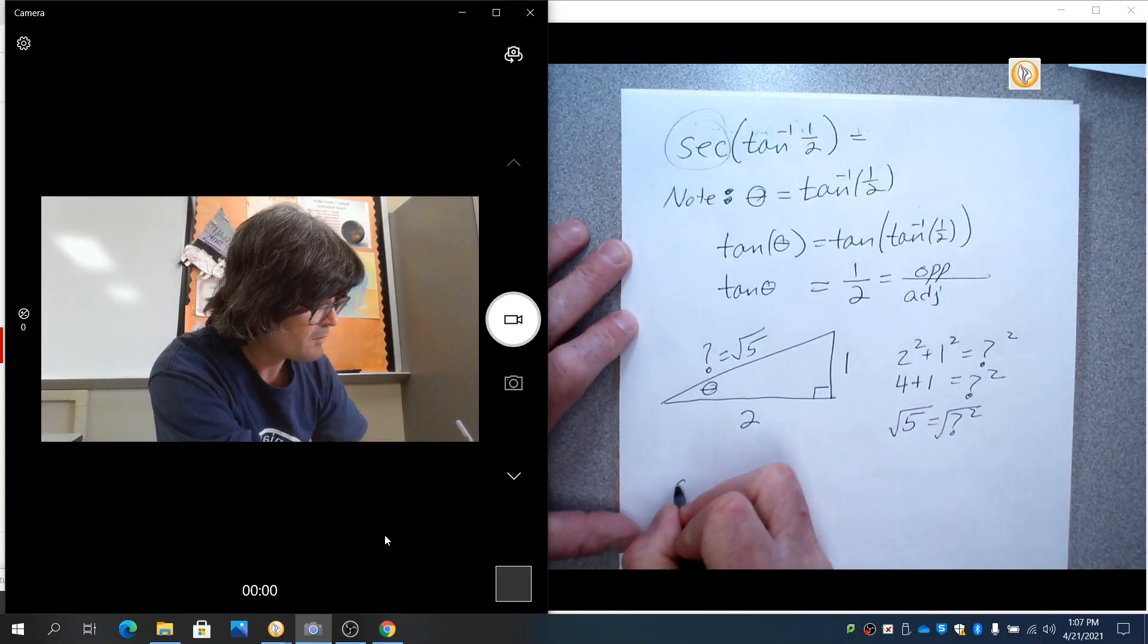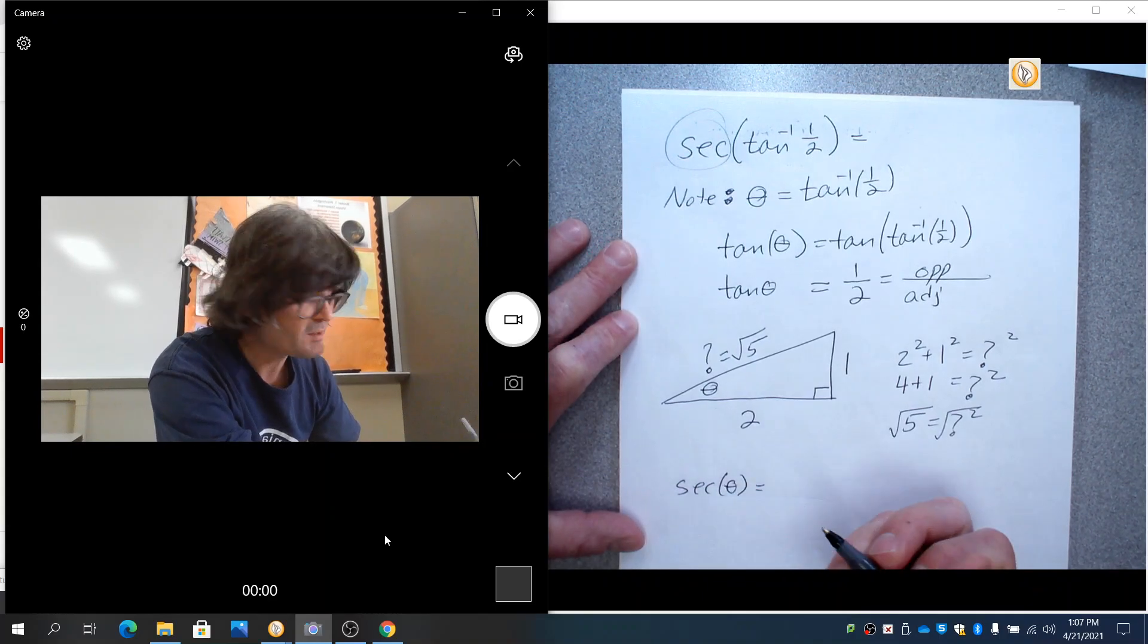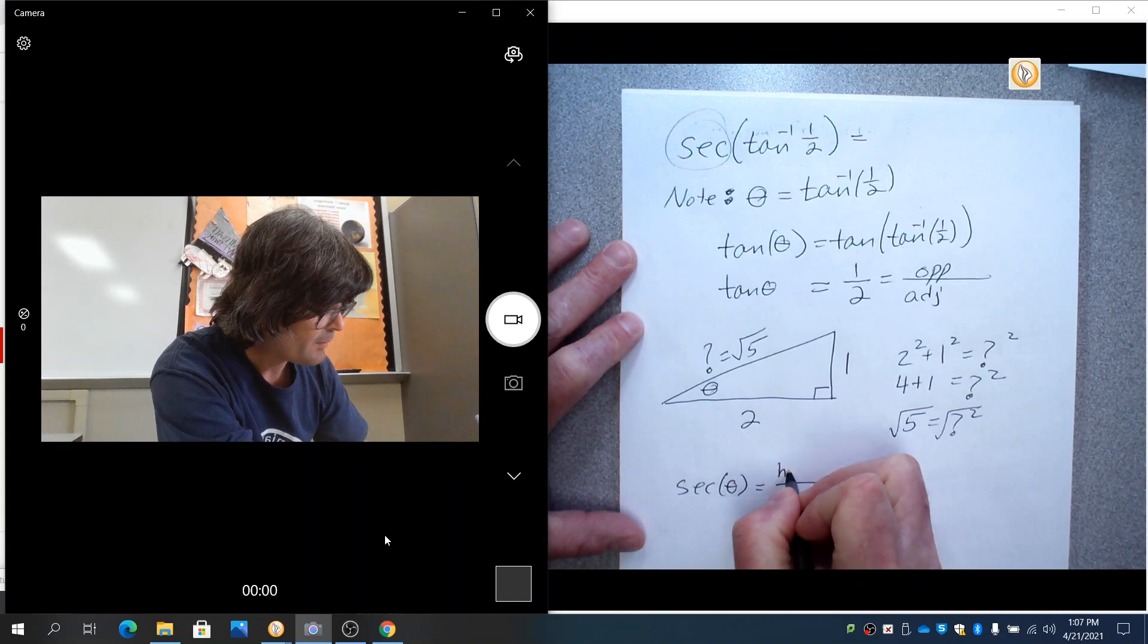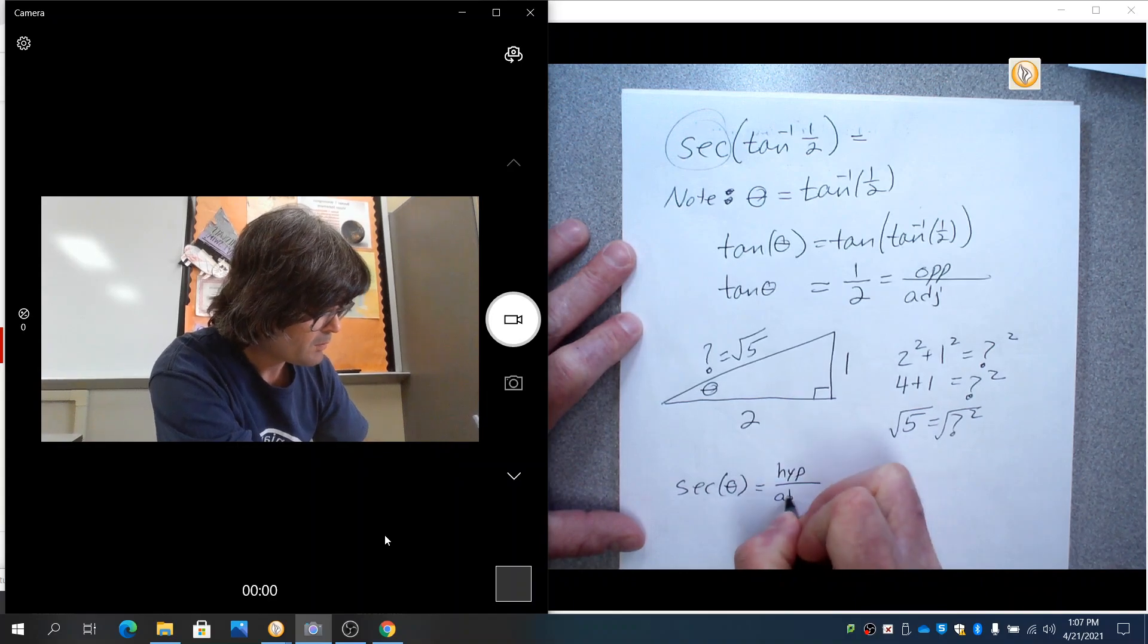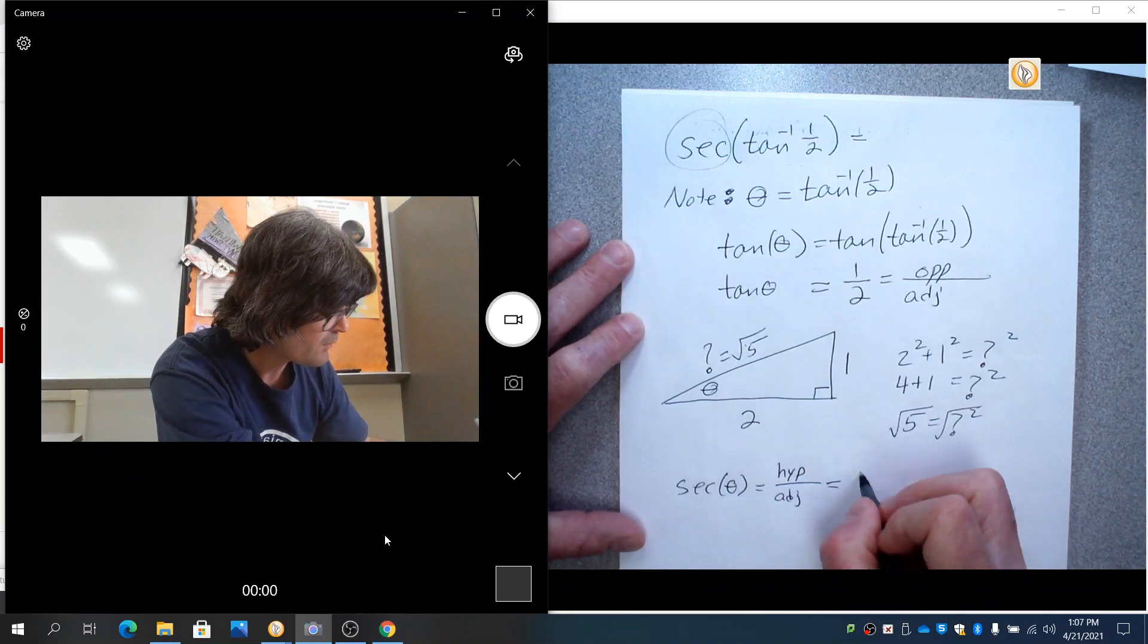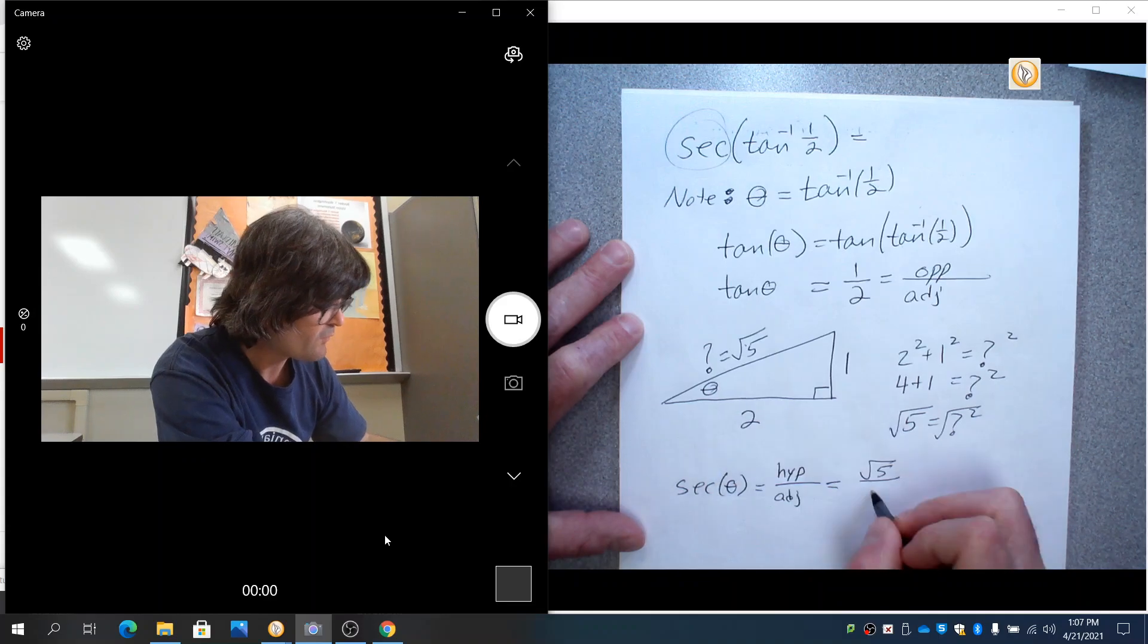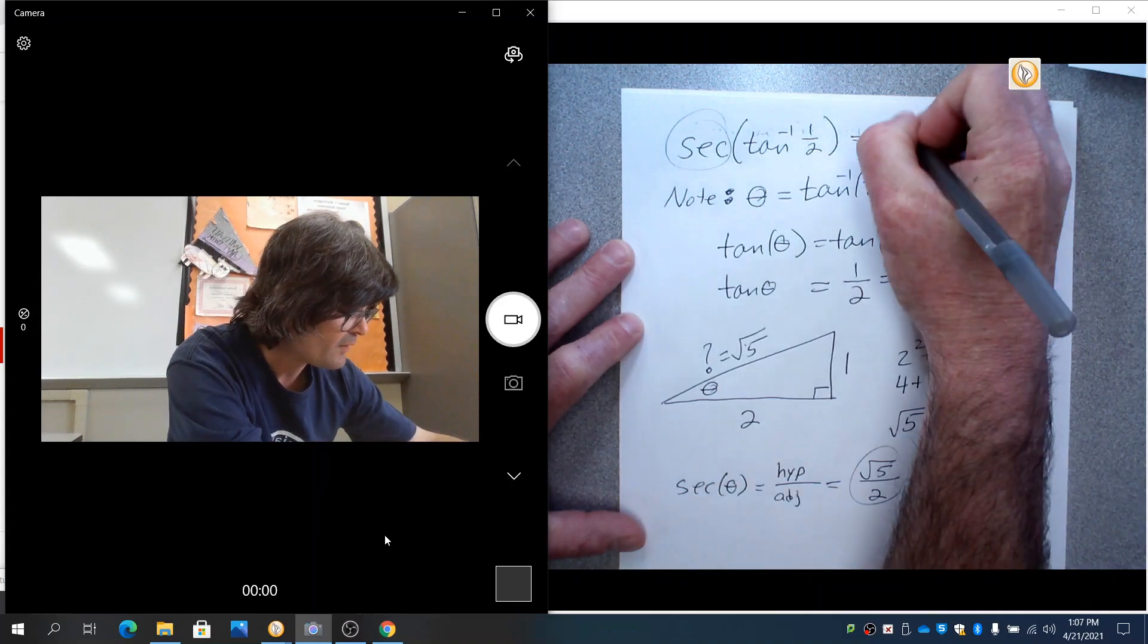So now we want secant of this. And secant is the reciprocal of cosine, which is going to be hypotenuse over adjacent. That's what secant is. And so hypotenuse is going to be root five. And adjacent is going to be two. So it's root five over two.